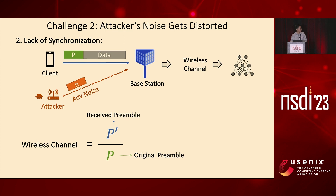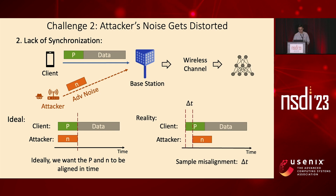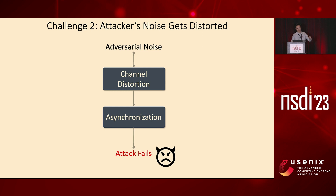Our attacker joins the game and starts to transmit adversarial noise n, designed to have the same length as the preamble. Ideally, we want our attacker to know exactly when the client is going to transmit. But in reality, because we are coordination-free and do not coordinate with the base station or client, there will always be a sample misalignment offset τ. With this offset τ, the noise n will fail to cover the entire region of the preamble, so the noise gets distorted. In summary, with these two factors — channel distortion and synchronization misalignment — transmitting this adversarial noise will get distorted and the attack will fail.